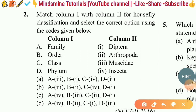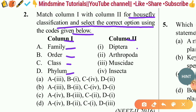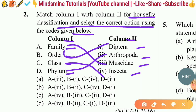The second question: Match column one with column two for housefly classification and select the correct option. Column one has family, order, class, phylum; column two has Diptera, Arthropoda, Muscidae, and Insecta. Family is Muscidae, order is Diptera, class is Insecta, and phylum is Arthropoda. The right answer is option A.